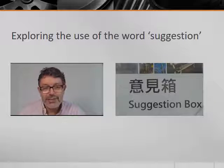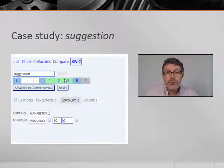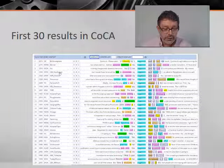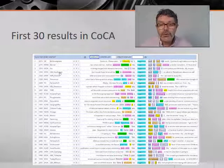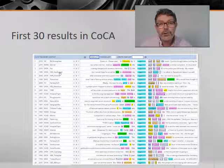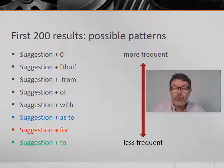We can try sifting or hypothesis testing with another one of Susan Hunston's examples: the common word suggestion. To explore its use, we run a similar quick or concordance search, sorting the results alphabetically. If you scroll down and look at the first 30 concordance lines or so, you can see some patterns emerging. You can then look at the next 30 lines and note any further patterns, and so on, until no new patterns emerge. After about 200 lines or so, the most and least frequent patterns show that the word suggestion frequently occurs by itself or with that. Less frequent patterns are with for and to.